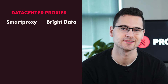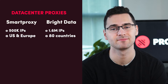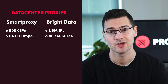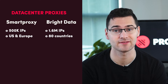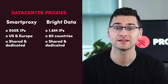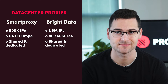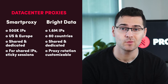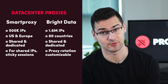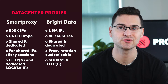For data center proxies, Bright Data is way ahead with over 1.6 million IPs from 80 countries, while Smart Proxy stands with 500,000 IPs in the US and Europe. Both allow unlimited threads and host shared and dedicated proxies, but Smart Proxy's rotation is limited compared to its competitor's fully customizable option.